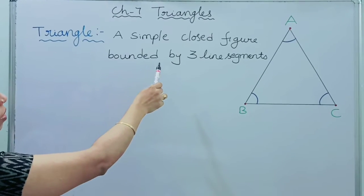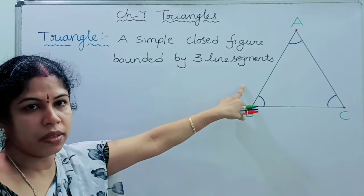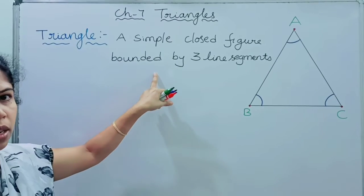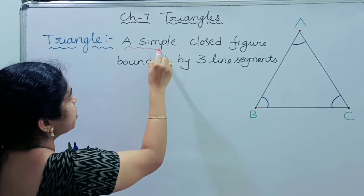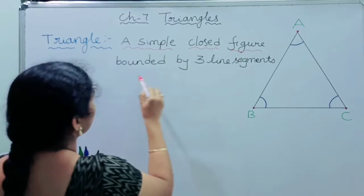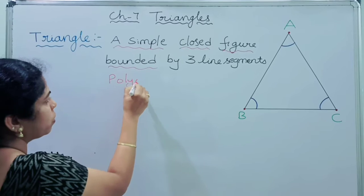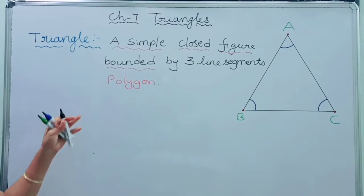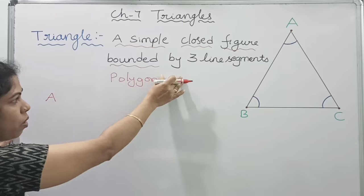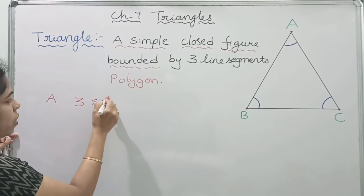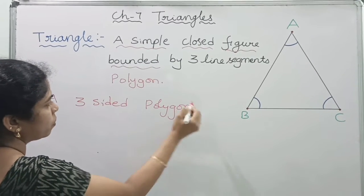Let us see the definition of a triangle. Already in earlier classes you have learnt that a simple closed figure bounded by three line segments is a triangle. Instead of that definition, we can also replace it with a polygon. A simple closed figure bounded by only line segments is a polygon, so a triangle can also be defined as a three-sided polygon.